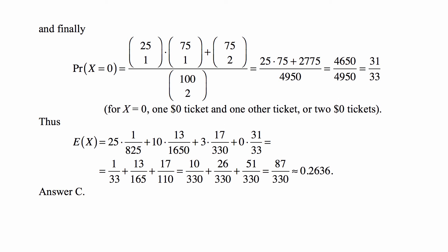Finally, the last possible value is 0. You get 0 as the value if you pick one ticket with no winning, one $0 ticket, and one other ticket, or two $0 tickets. There's 75 $0 tickets, so it's 75 choose 1 of those times 25 higher amount tickets choose 1, plus 75 choose 2, that's just choosing two $0 tickets. And again divided by 100 choose 2. And this ends up being 31 over 33.